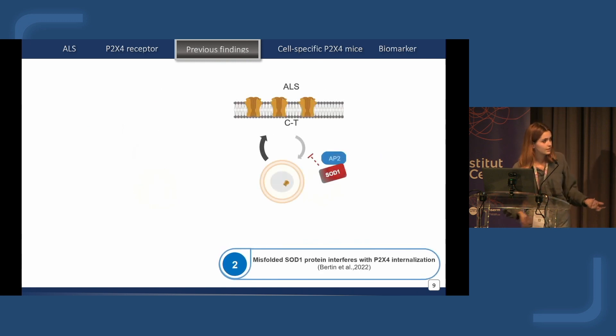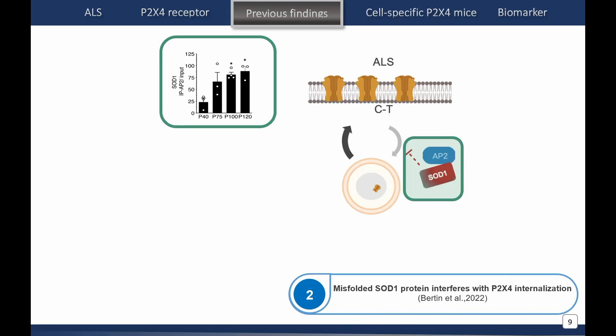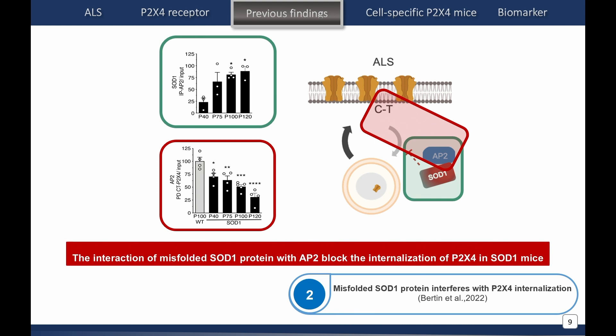To prove this, we performed immunoprecipitations to study interactions between proteins, and we see that the interaction between AP2 and mutated SOD1 was increasing over disease progression. But the interaction between P2X4 and AP2 showed exactly the opposite — P2X4 was decreasing its interaction with AP2. So we conclude that the interaction of misfolded SOD1 with AP2 was blocking the internalization of P2X4, leading to the surface increase we observe in peripheral cells.